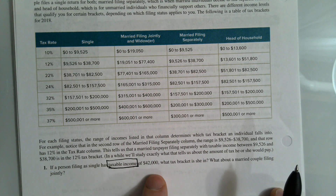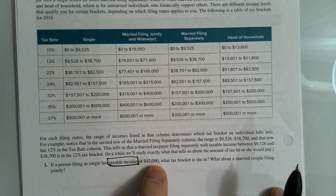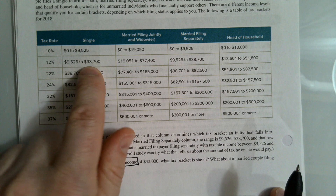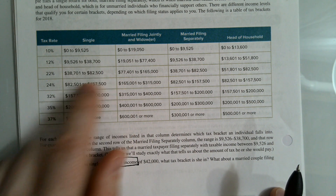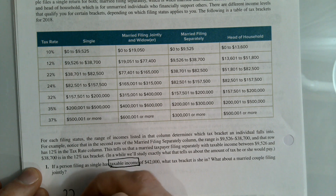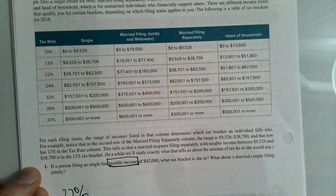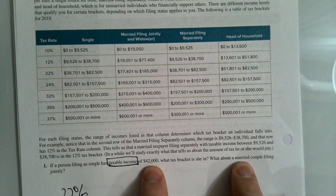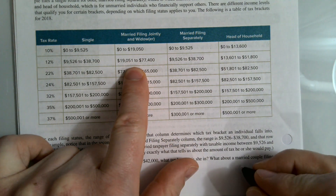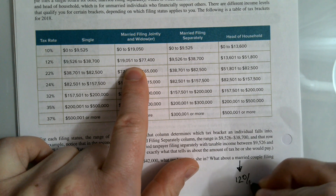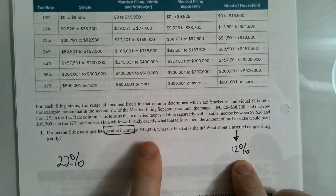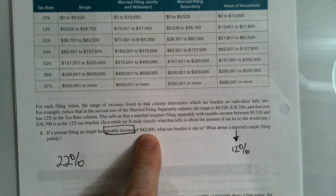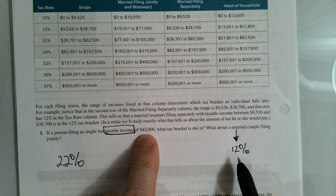So if a person is single with a taxable income of $42,000, we need to figure out where $42,000 fits in the ranges. Notice $42,000 is above $38,000 but below $82,000, so they fall into the 22% tax bracket. If that same person were married filing jointly with $42,000, they would fall into the 12% tax bracket.